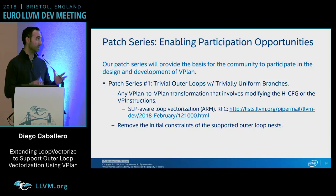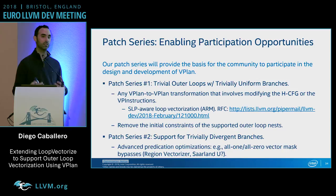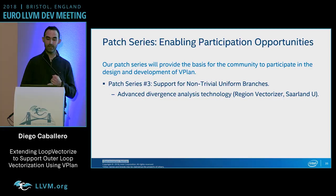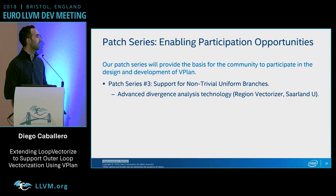Someone could also help remove the constraints we initially have in the supported outer loops. For patch series two on predication, the region vectorizer implements advanced predication — it would be great to bring this technology to vPlan. For patch series three on divergence analysis, we are already in discussion to bring divergence analysis to vPlan — Simon Moll is giving a talk tomorrow about this.